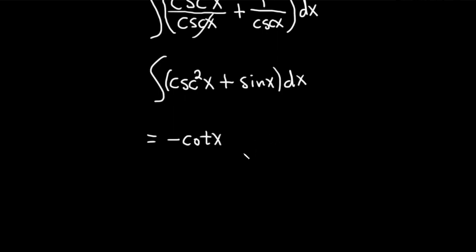Likewise, the derivative of cosine is negative sine. When you integrate sine, you'll get negative cosine.